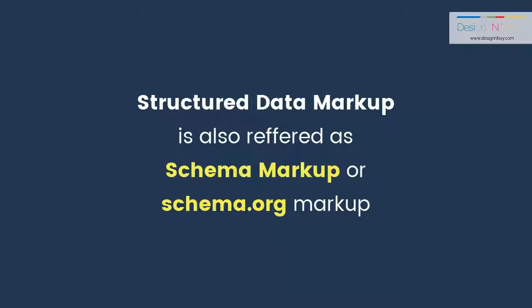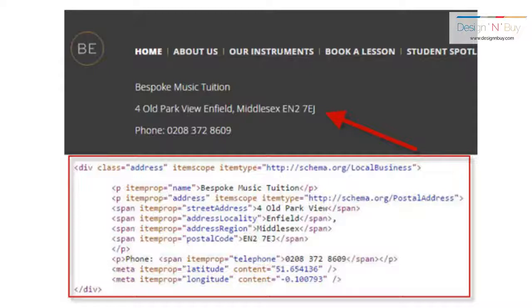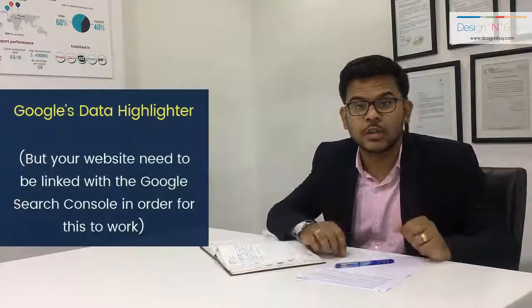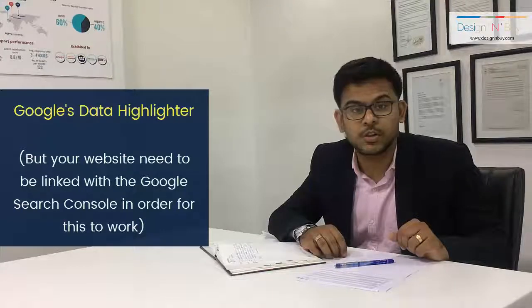Structured Data Markup — often referred to as Schema Markup or Schema.org Markup — can be added to your website's code to provide search engines with more information about your business. The image here shows how a local business has placed their NAP in the footer of their website, marking it up with Schema.org. All you need to do is replace the text shown in black with your own details. There are also many online tools to help you input the information needed by web crawlers, one of them being Google's own Data Highlighter. Just make sure your website is linked up with the Google Search Console for this to work.